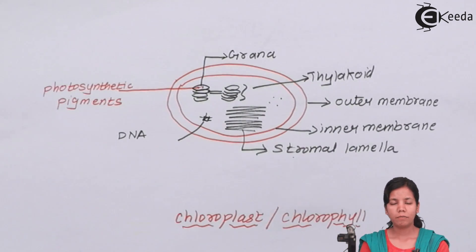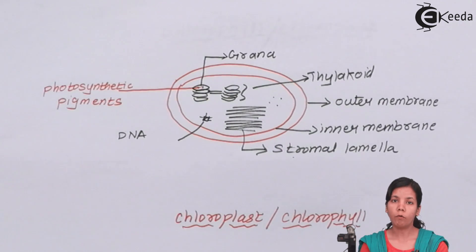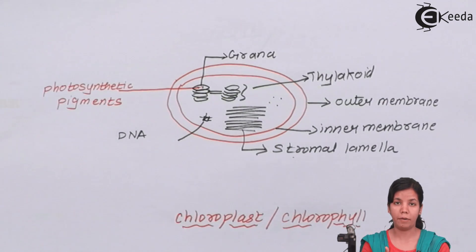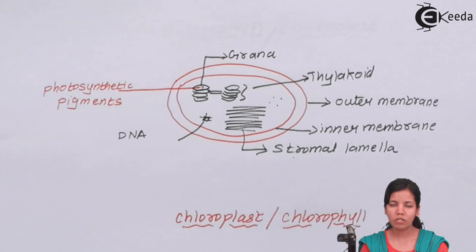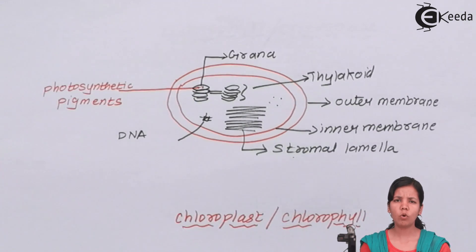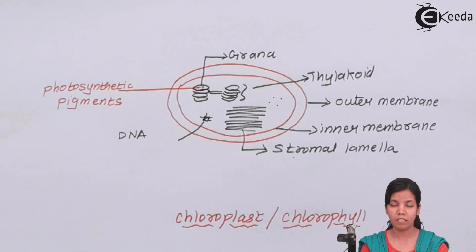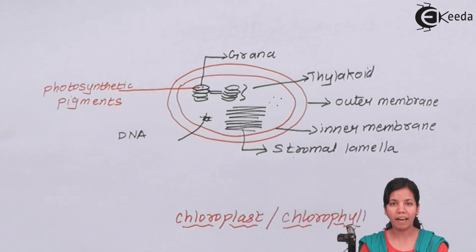Now we have studied the diagram of chloroplast. We all know the photosynthesis equation: carbon dioxide plus H2O, in the presence of sunlight and chlorophyll, gives the formation of glucose, with oxygen and water as byproducts. This equation works during the day. At night there is another equation. So will this chloroplast help in photosynthesis even during night? This will be studied in the ahead part of the chapter.